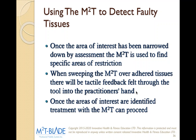When sweeping the M2T over adhered tissue, there will be a tactile feedback felt through the tool into the practitioner's hand. Once areas of interest are identified, treatment can proceed. For example: a client comes in with knee pain, you take them through a squatting motion, see instability through the hip, do range of motion and muscle testing, find the glute med and glute max are weak or immobile, take the instrument, sweep over those tissues, and find the exact area of the myofascial adhesions through reverberation in the tool.